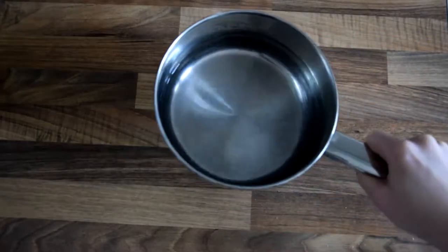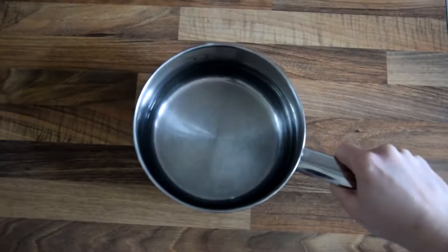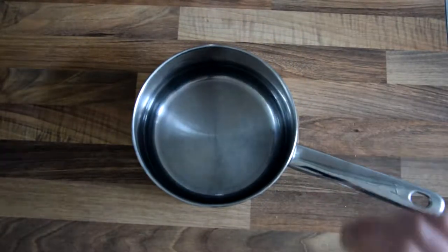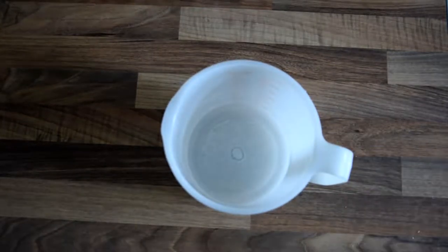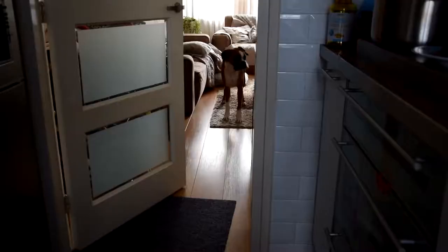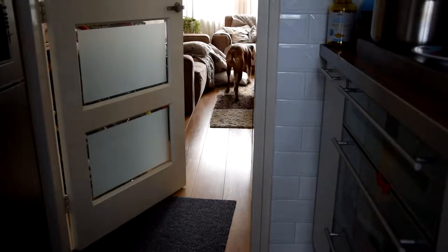We will also need a pan with water, a bowl of some sort. This one works the best for me. And a cake tin with parchment paper. My poor dog was so scared of the camera.